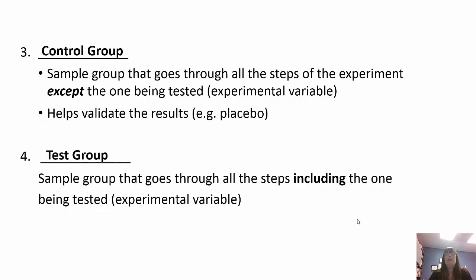We also have two groups: the control group and the test group. The control group goes through all of the steps of the experiment except for the experimental variable, and it helps validate results by giving you something to compare to. The test group goes through all steps including the experimental variable. For example, if we want to test Miracle-Gro fertilizer, the plants that don't get fertilizer are the control group, and the plants that get the Miracle-Gro are the test group. If the test group grows and the control group does not, you can attribute it to the Miracle-Gro.